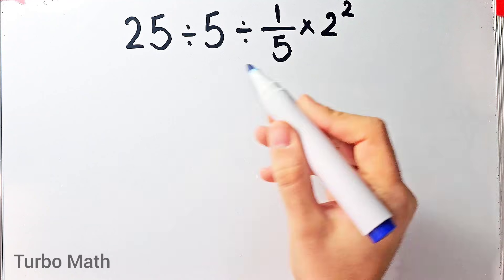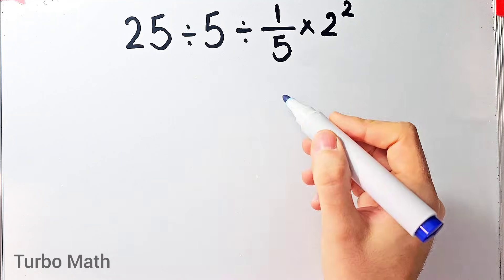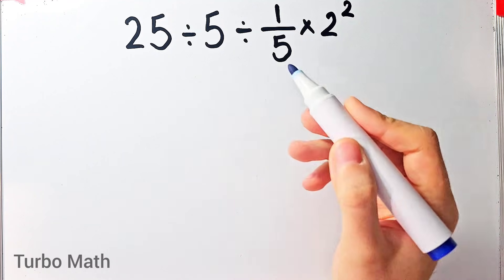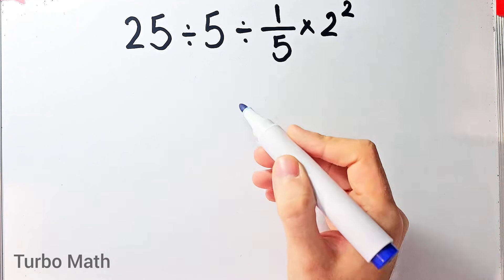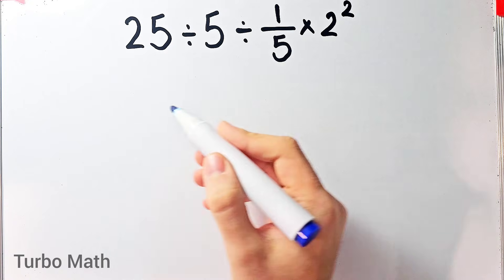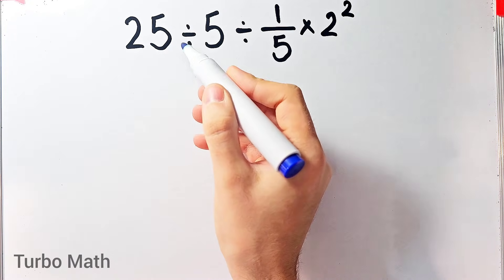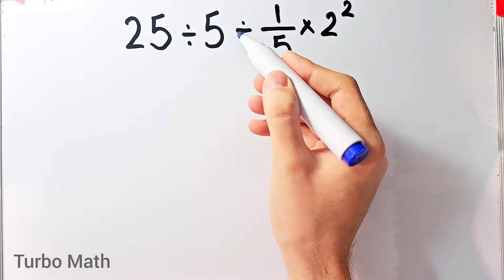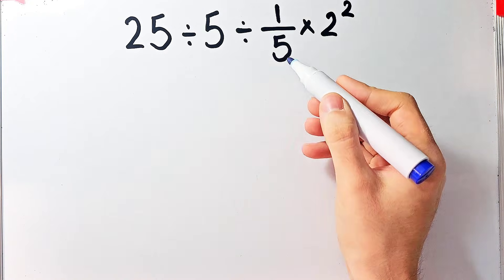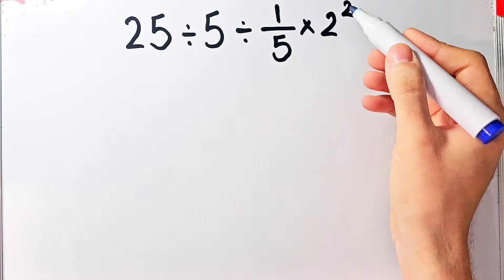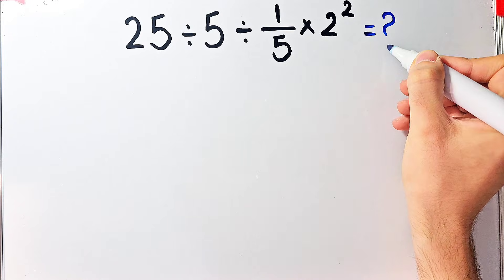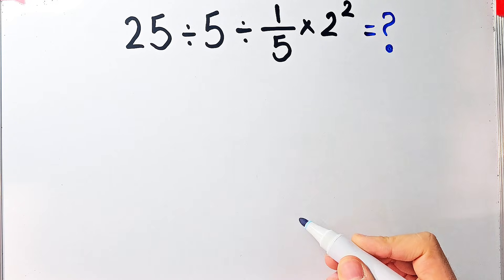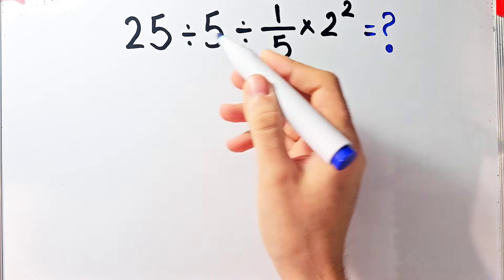Hi friends, welcome to Turbo Math channel. Many people when they see this question don't know which operation to do first, so they often make a mistake. The question is: 25 divided by 5 divided by 1 over 5, then times 2 to the power of 2. What is the answer?